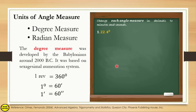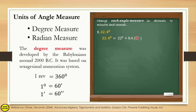For example, we have 22.4 degrees. To convert to minutes and seconds, first take the whole number: 22 degrees. Then multiply the decimal part, 0.4, by 60 minutes — since 1 degree equals 60 minutes. So 0.4 times 60 equals 24 minutes. Therefore, 22.4 degrees equals 22 degrees and 24 minutes.